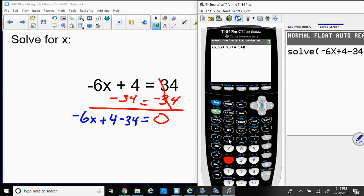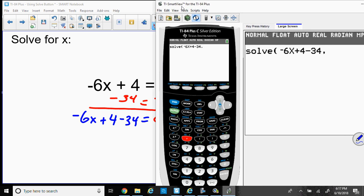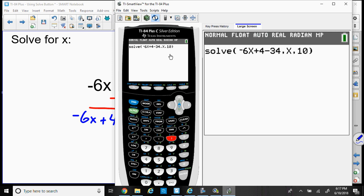So now all I have to do is press the comma button because I have my equation in. And my variable is x, so that's next to the alpha button. Press comma again. And now I have to take a guess. I'm going to guess the number 10 and close the parenthesis. And now the calculator is going to tell me the answer to this question. And the answer is -5.